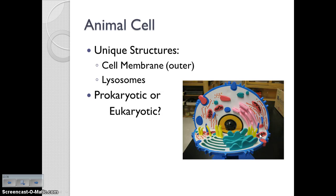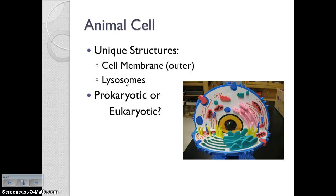The unique structures of animal cells: the outer layer of an animal cell is the cell membrane — they do not have a cell wall. They also have organelles called lysosomes that are responsible for digesting materials within the cell. They release digestive enzymes and break down waste so it can be released from the cell. Animal cells are eukaryotic — you are an animal, you are eukaryotic.